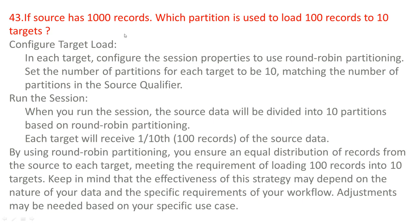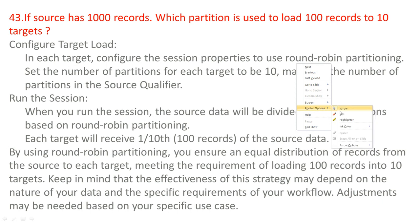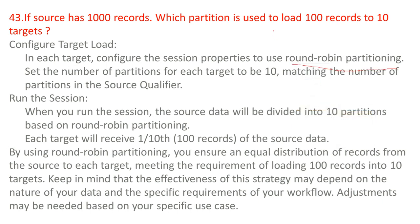If the source has 1000 records, which partition is used to load 100 records to 10 targets — meaning each target stores 100 records? Here we configure target load. In each target, configure the session properties to use round robin partitioning. Round robin means it cycles through partitions 1, 2, 3, 4 — up to 10 partitions — and whichever job executes first, then the next job, and so on. That is how round robin partitioning works.